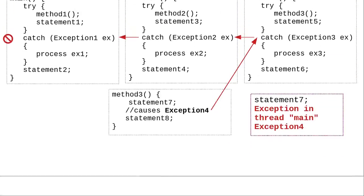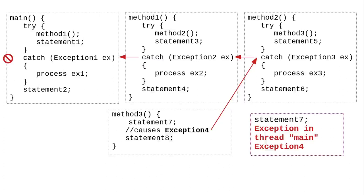Finally, we have the situation where method 3 does statement 7 and then causes an exception that nobody handles. Everyone terminates, throwing the exception to their caller, eventually going all the way up to main, which can't handle the exception, and the program crashes.